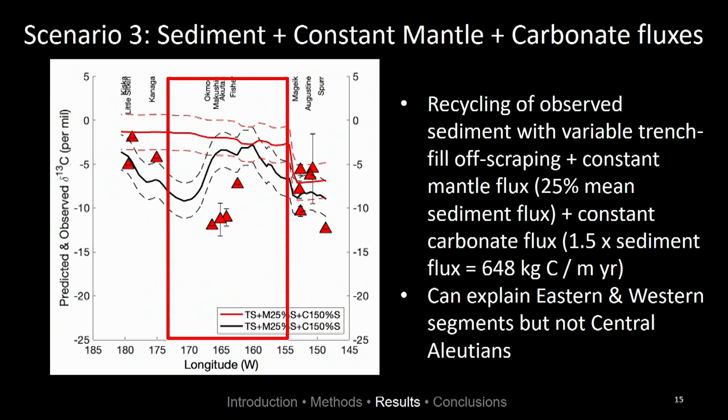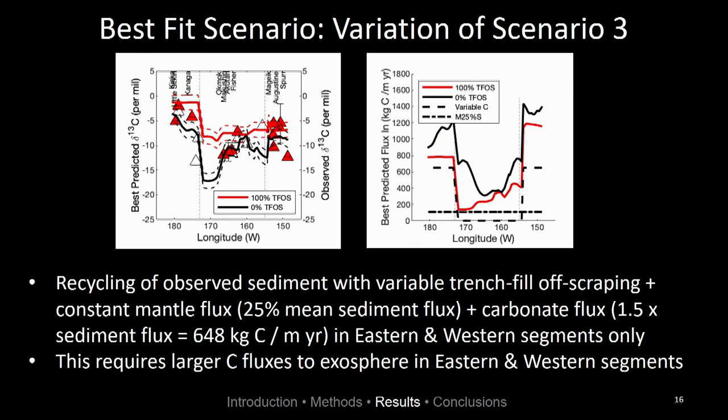The third scenario assumed recycling of the subducted sediments with variable trench fill off-scraping, a constant mantle flux of 25 percent the mean sediment flux, and a carbonate flux also contributing to our outputs. We calculated that a carbonate flux of about 1.5 times the mean sediment flux gave us a decent match for both the eastern and western segments, though it does not give a good fit for the central Aleutians. We concluded that a combination of these different scenarios is required to match what we're seeing in the volcanic gases.